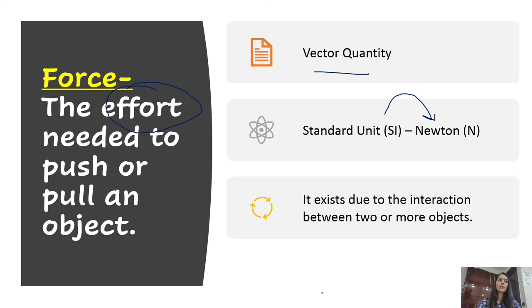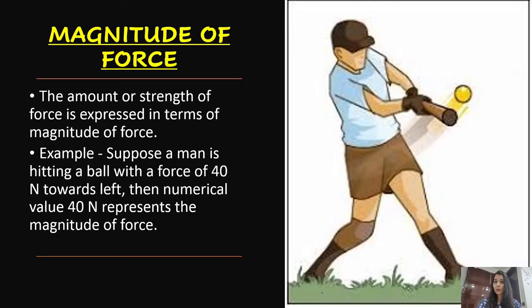Now let's understand what is magnitude of force. Imagine this person is kicking a ball towards the left direction with a force of 40 Newton. Here the force of 40 Newton becomes a magnitude and towards left becomes a direction. So 40 Newton represents the magnitude of the force.